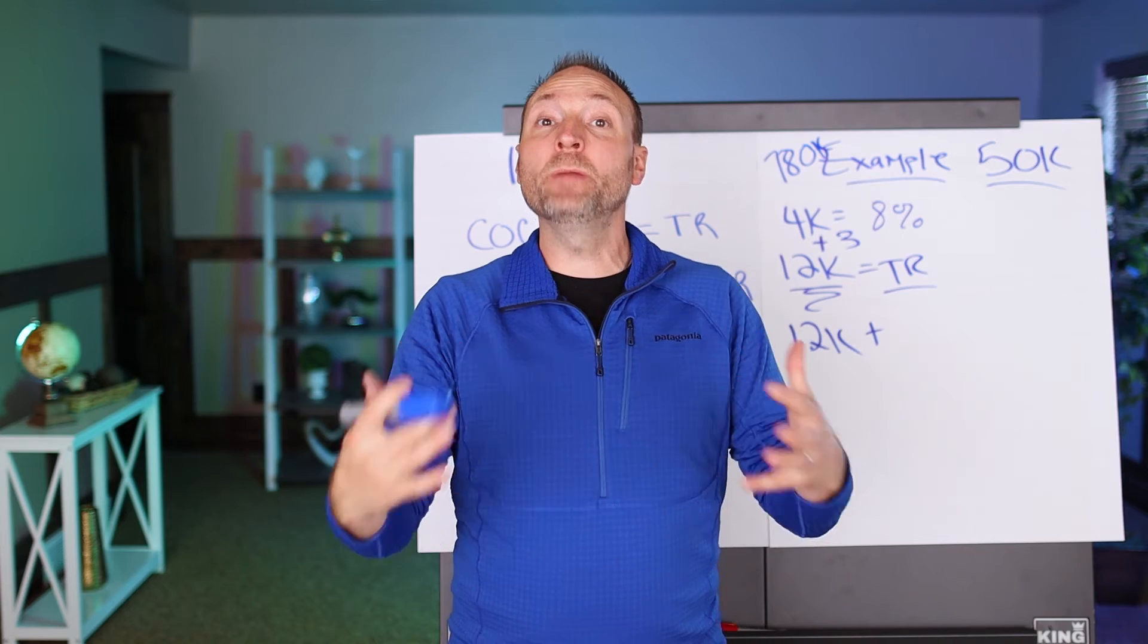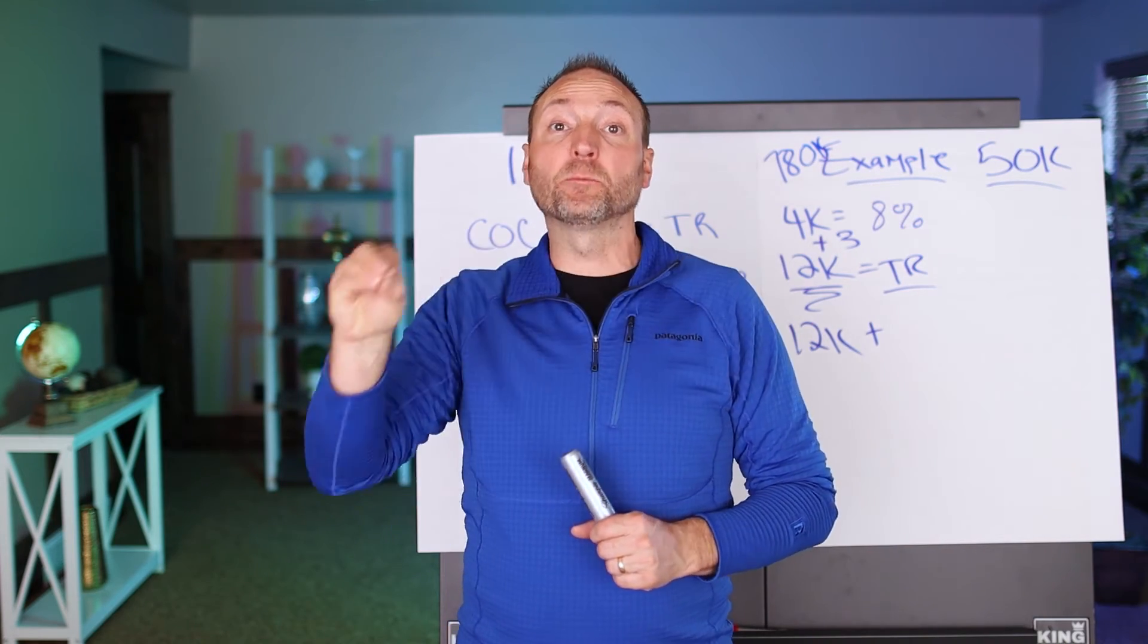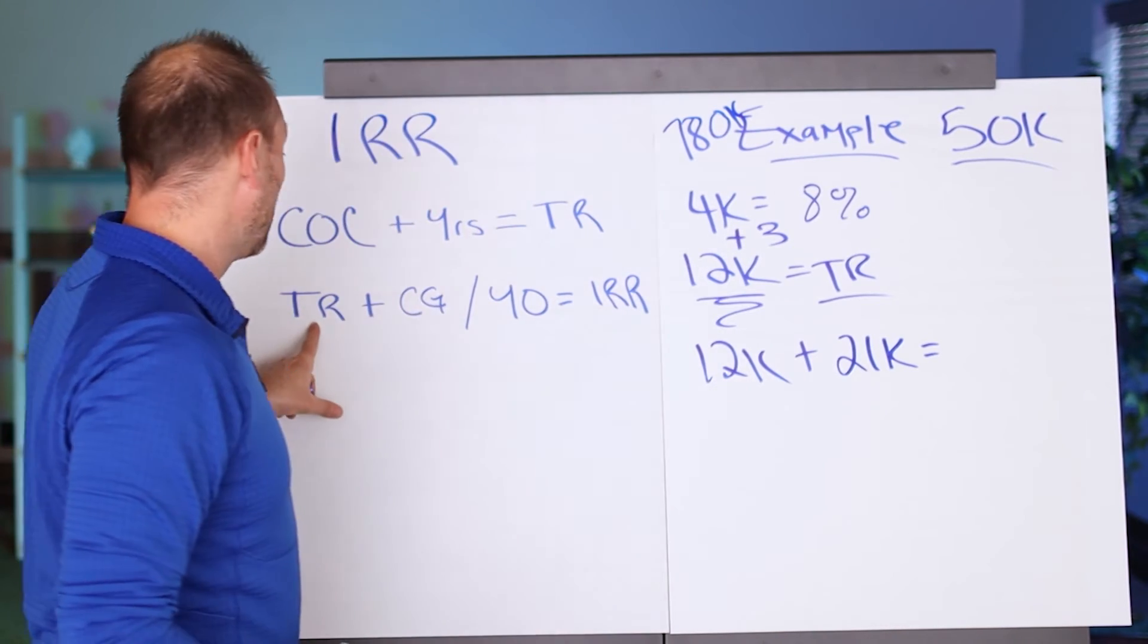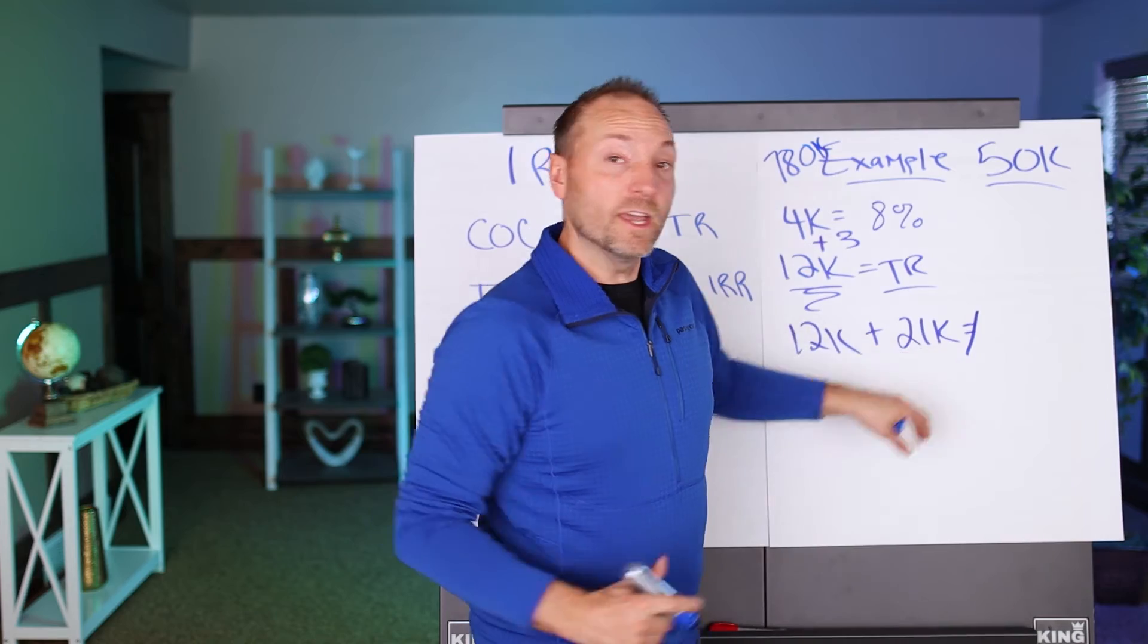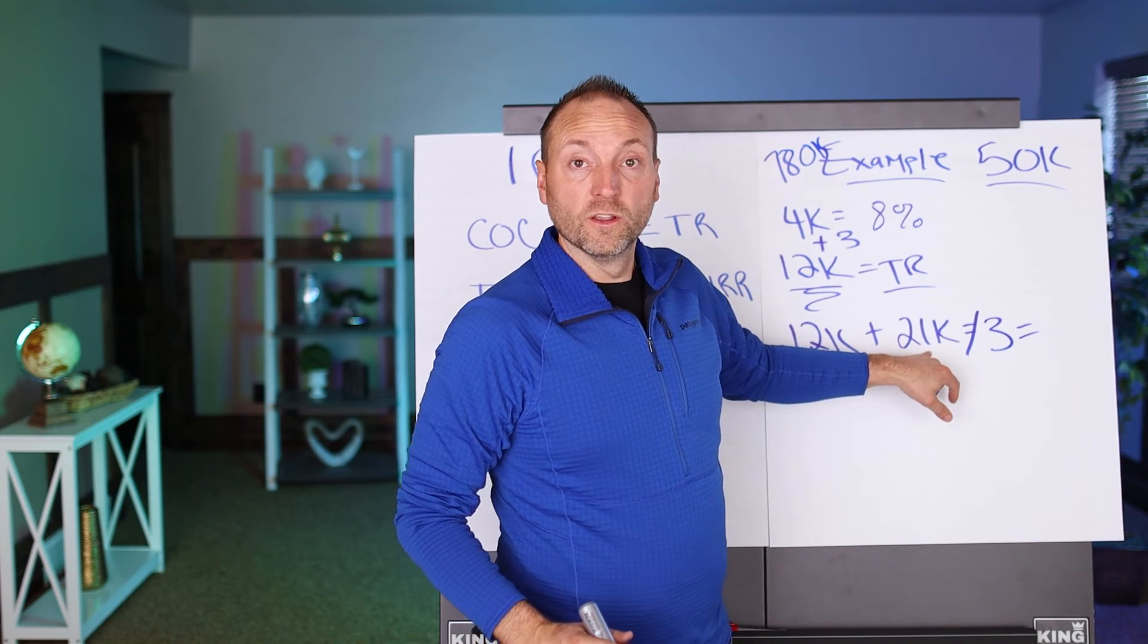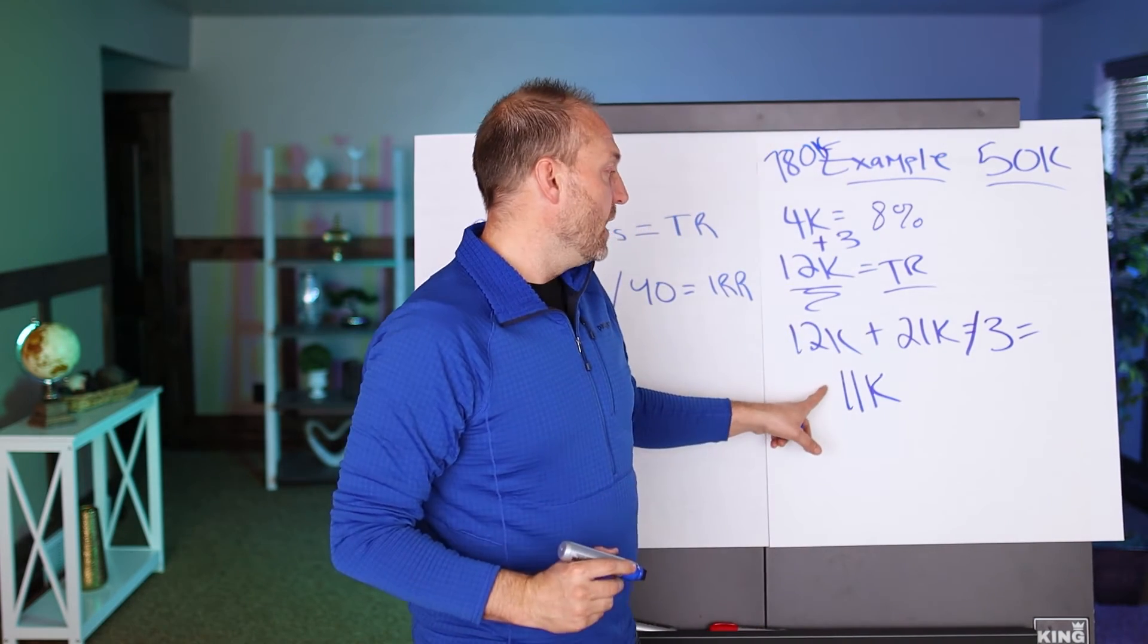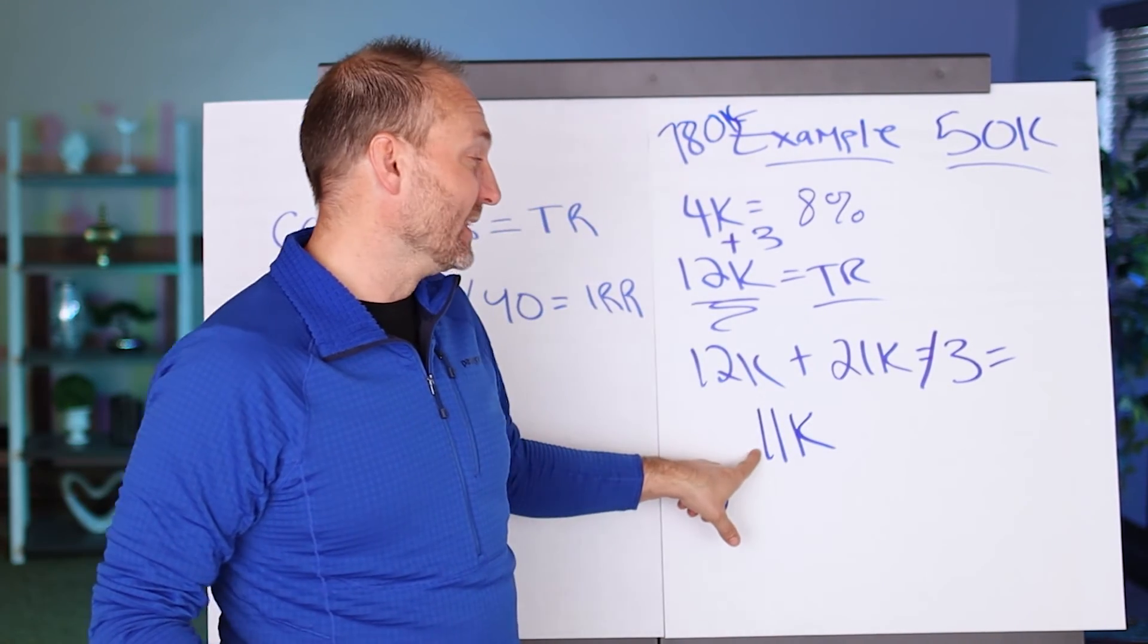So then we take our $12,000 down here and we plus the capital gains. When we sold the property, each investor made about $21,000 on the sale of that property for their prospective percentage of ownership. So each investor made about $21,000 on the deal. So they made $12,000 while we owned it, that's the total return. Then as we sold it, their capital gains was $21,000, and then we owned it three years. So we take $12,000 times $21,000, so we have $33,000 divided by three.